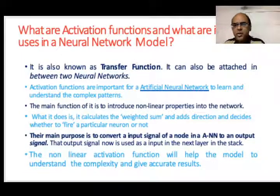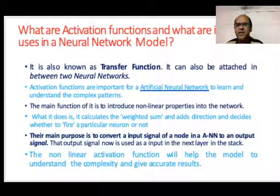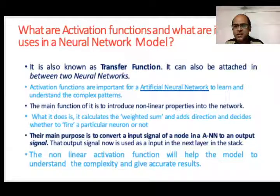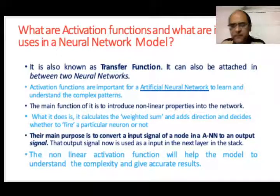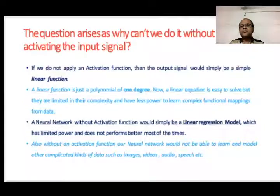What are activation functions and how are they used in a neural network? The activation or transfer function acts as an attachment between two neural networks. These activation functions are important for the ANN to learn and understand complex patterns. The main objective is to introduce nonlinear properties into the network — to convert an input signal in an artificial neural network into an output signal, which is then used as input to the next layer.